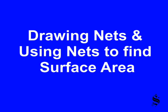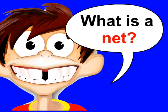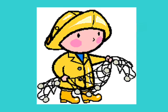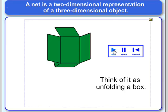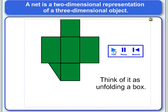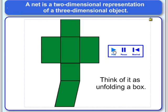Drawing Nets and Using Nets to Find Surface Area. So what exactly is a net? Not a fishing net, but a mathematical net. A net is a two-dimensional representation of a three-dimensional object. Think of it as unfolding a three-dimensional object into a two-dimensional one. So this would actually be a net of that rectangular prism.